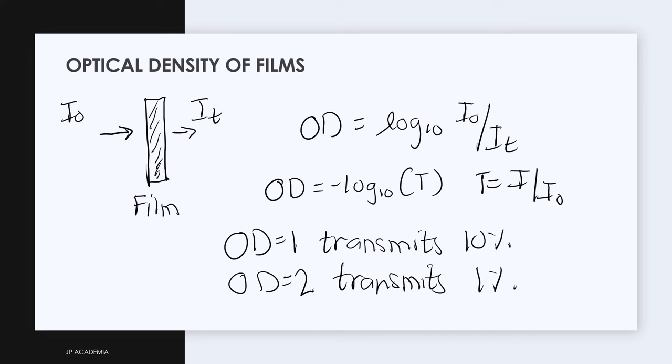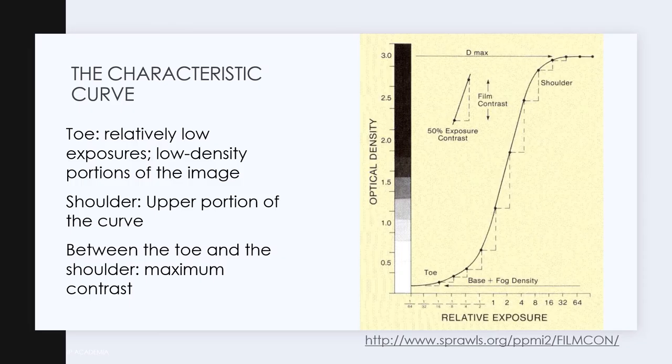Since the human eye works approximately logarithmically to light intensity, a film OD of 1 appears to be 2 times brighter than an OD of 2.